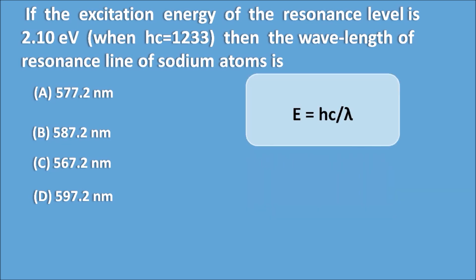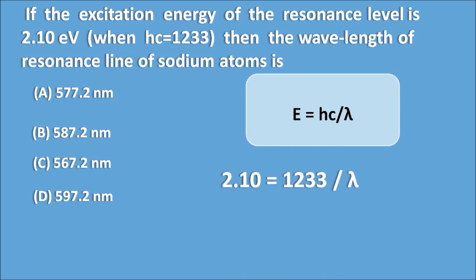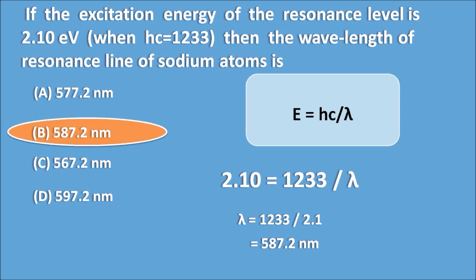Here we simply use the equation E = hc/λ. The hc value and E value are already given, so we need to find lambda. So 2.10 = 1233/λ, which gives λ = 1233/2.1 = 587.2 nanometers. Therefore B is the right answer.